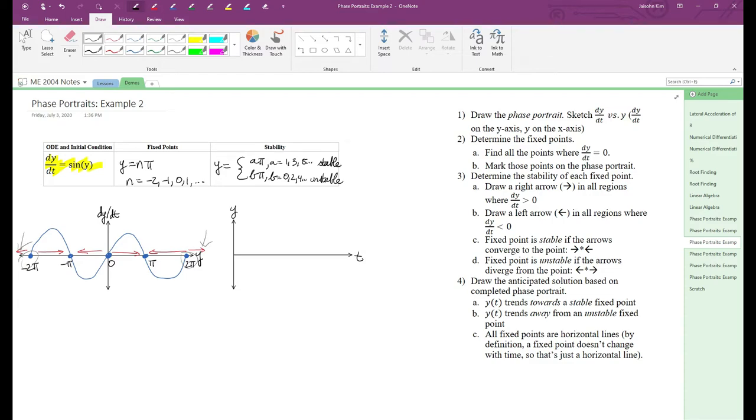We're done with the phase plot, so let's move on to the anticipated solution. Instead of having just one initial condition, let's say our initial conditions will be integer multiples of π over 2. We draw the curves going towards stable fixed points and away from unstable fixed points.